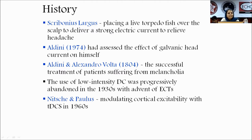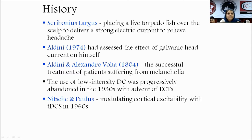The torpedo fish is a fish found in tropical and temperate regions, very famous for its spontaneous electrical discharges. Scribonius Largus, a court physician in the Roman Empire, used this live torpedo fish over the scalp to deliver strong electric current to relieve headache — this is the beginning of tDCS. Later, Aldini assessed the effect of galvanic head current on himself, and Aldini and Volta had successfully treated patients with melancholia using brain stimulation. The use of low-density DC was progressively abandoned in the 1930s with the invention of electroconvulsive therapy.